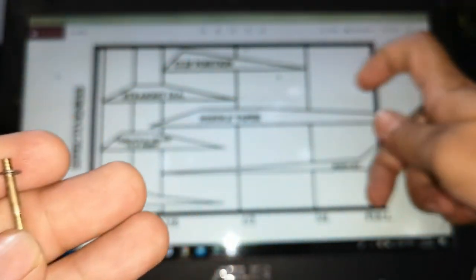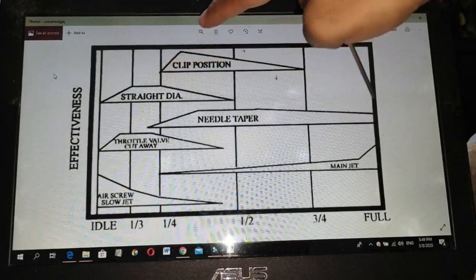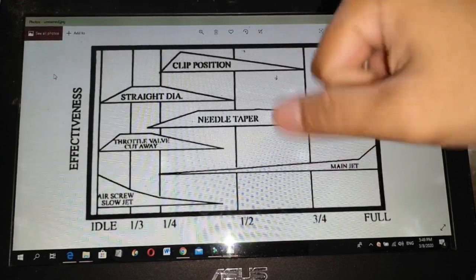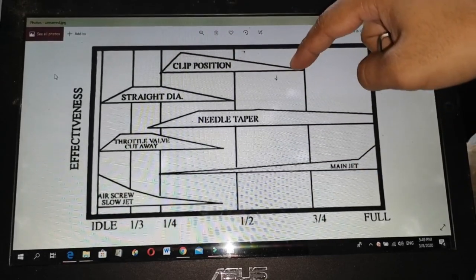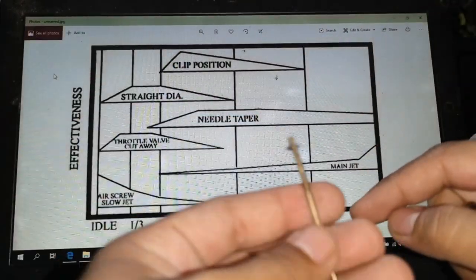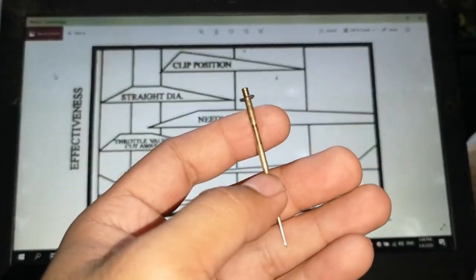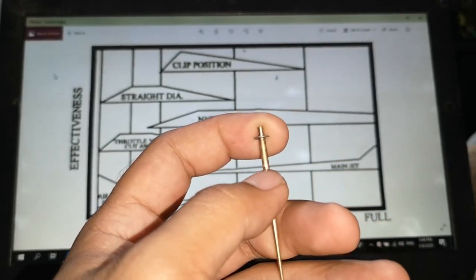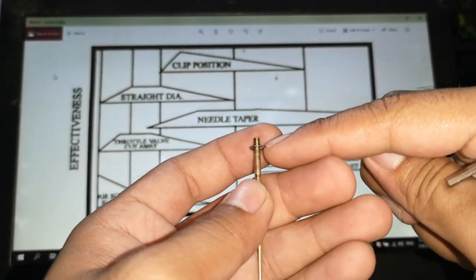So, kung may problema ka dito sa from 1/4 throttle. Yan. Pag may problema ka sa 1/4 throttle hanggang ito sa 3/4 throttle. Na parang bumuburo. Nagaburo. Nagaburo from 1/4 hanggang 3/4. Ibig sabihin, ang may problema is itong clip position. Ito, ito. Yan. So, pag nagaburo siya, may parang nag-ubo-ubo. Mabigat ang andar. Ibig sabihin, rich ang mixture nyan. So, babawasan mo.